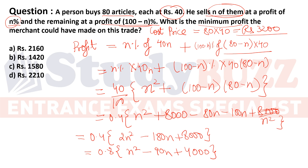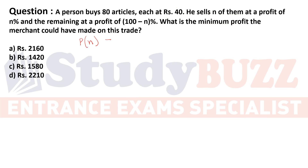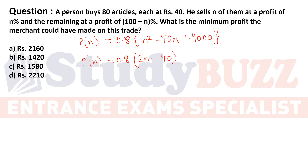We know this is our equation of profit in terms of n. Since we need to find the minimum profit, we can use the concept of derivatives. We find the value of n at which P(n) is minimized.